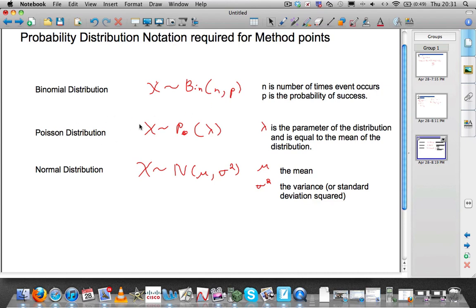For Poisson, the examiner wants to see X, then that squiggly line, Po for Poisson, in brackets, whatever lambda is. In this case, it's always the parameter of the distribution and is equal to the mean of the distribution. So in here, depends on the problem, but goes in the parameter.